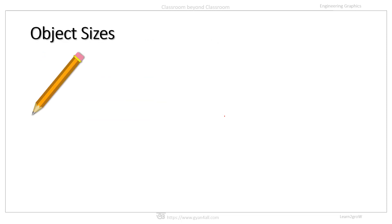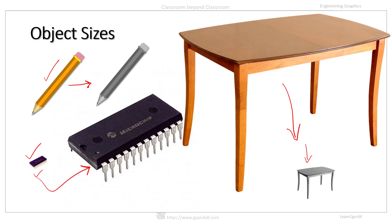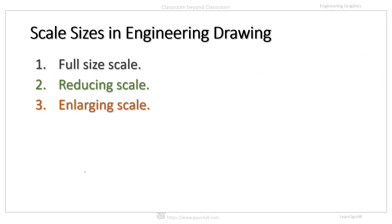We can also understand this from object sizes. If we want to draw a pencil, we can draw it at the exact size — if the pencil is 10 centimeters, we draw it 10 centimeters long on the drawing sheet. But if we want to draw a large object like a table, we may have to reduce the sizes. On the other hand, if we want to draw a very small object such as a micro-scale shape, we may have to increase the size for better understanding or presentation.